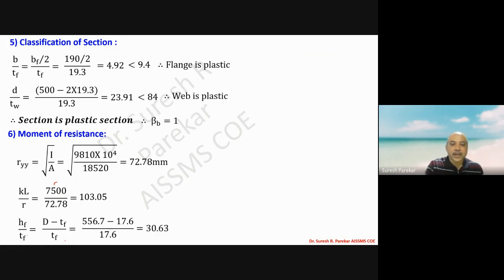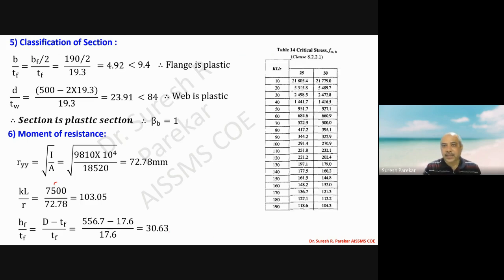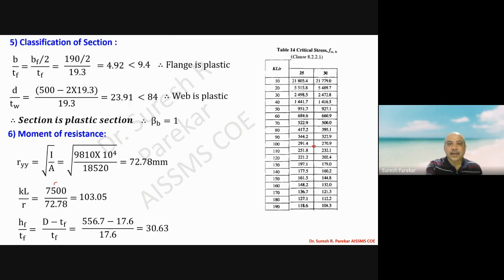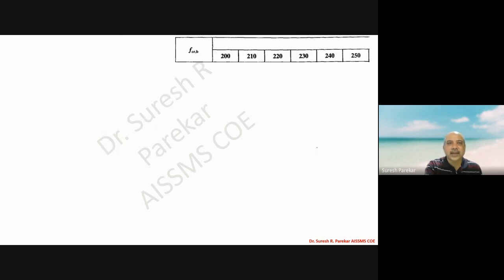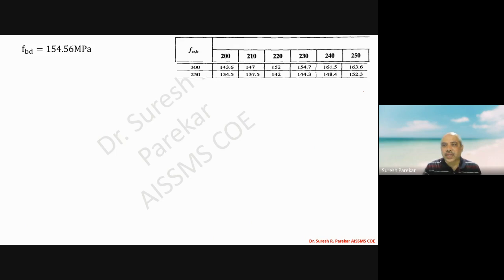For hf/tf: (556.7 minus 17.6) divided by 17.6 gives 30.63. From these values of KL/r equal to 72 and hf/tf equal to 30.63, we interpolate from the fcrb table. The surrounding values are 291, 270, 251, 232, and after interpolation between 280 and 260, we take fcrb approximately 260, giving fbd equal to 154.56 MPa.